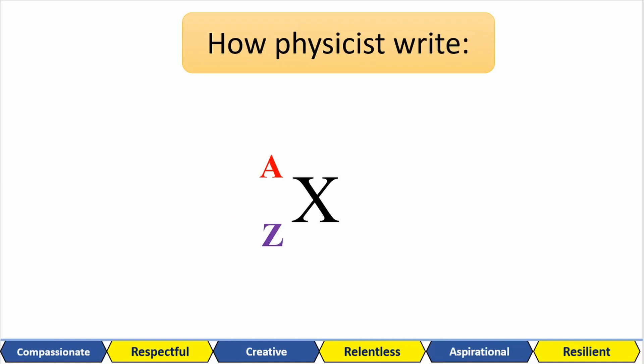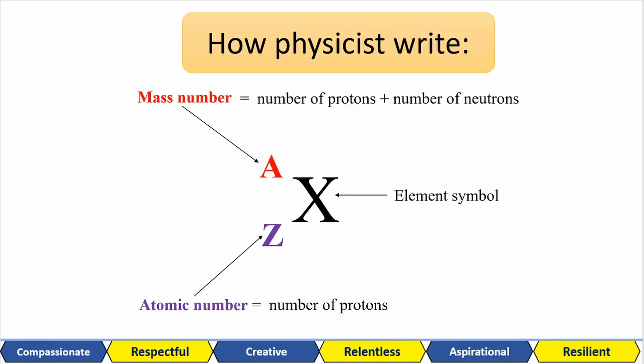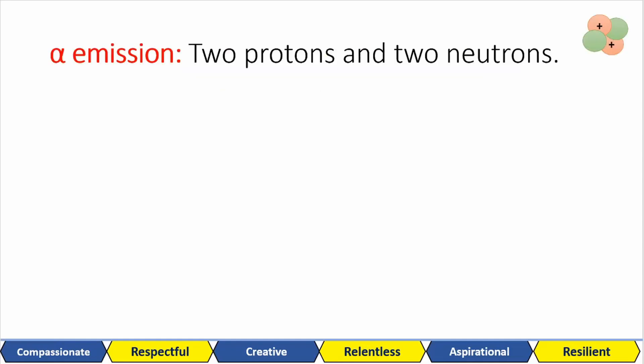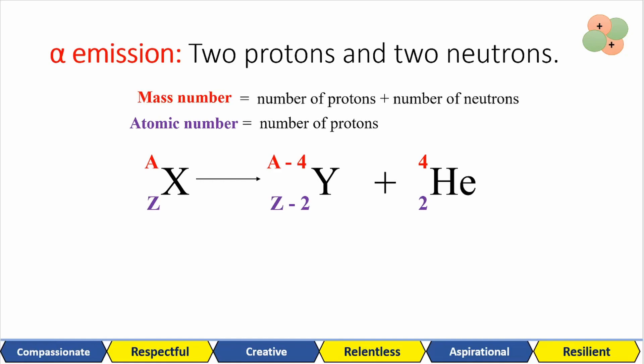When discussing atomic structure, we have the mass number on top and the atomic number at the bottom. The mass number is your number of protons and neutrons and the atomic number is your number of protons. Alpha decay or alpha emissions, as we saw from Rutherford's experiment, are two protons and two neutrons. This means that when a substance undergoes alpha decay, it will give off two protons and two neutrons. This means that the mass number goes down by four and the atomic number goes down by two. The atomic number decreases by two because it lost two protons and the mass number decreases by four because it lost two protons and two neutrons.